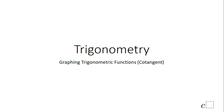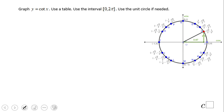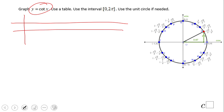Welcome, or welcome back to C-Square. In this video clip, we're going to look at the graph of cotangent. This is the graph of cotangent and we'll graph it on the interval 0 to π. I'm going to use a table, so let's set that up.